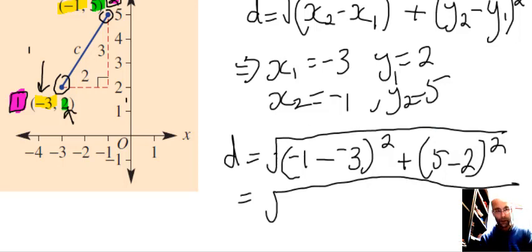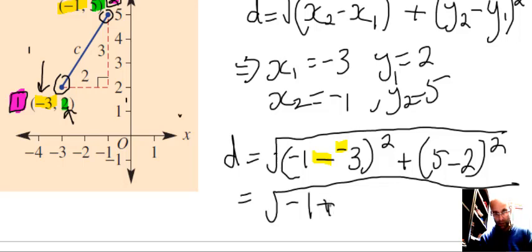So be careful here, we've got negative 1 minus negative 3. That's the same as negative 1 plus 3, or plus positive 3. What's negative 1 plus positive 3? It's negative 1 plus 3 all squared. 5 minus 2 is 3 squared.